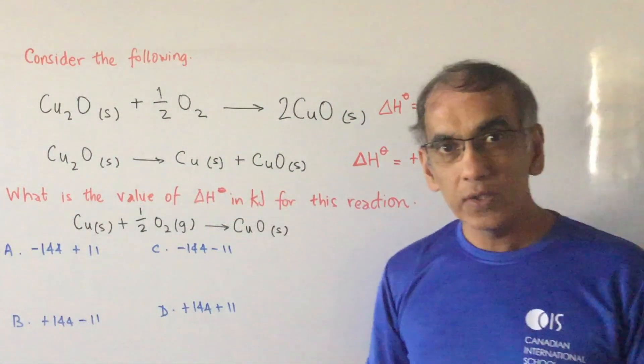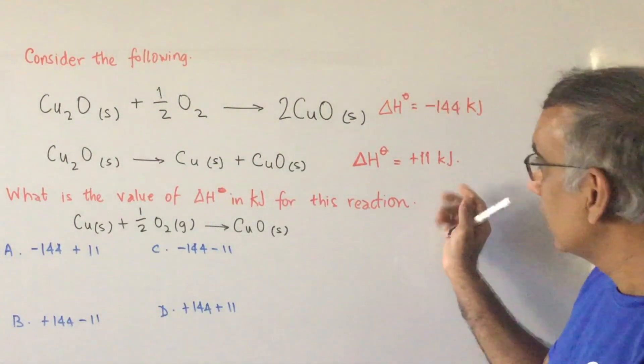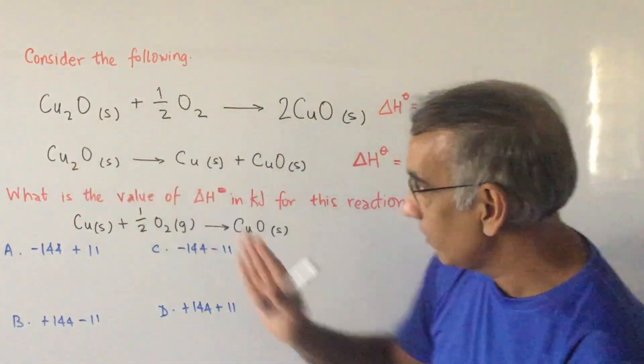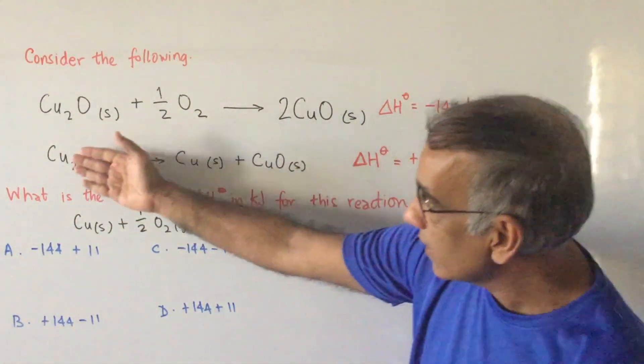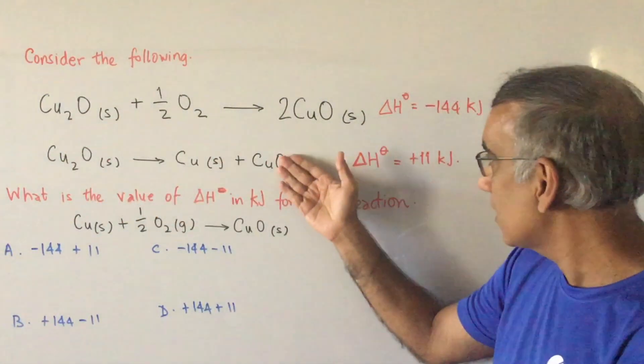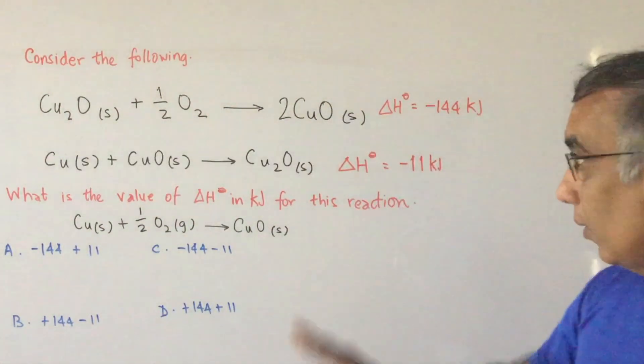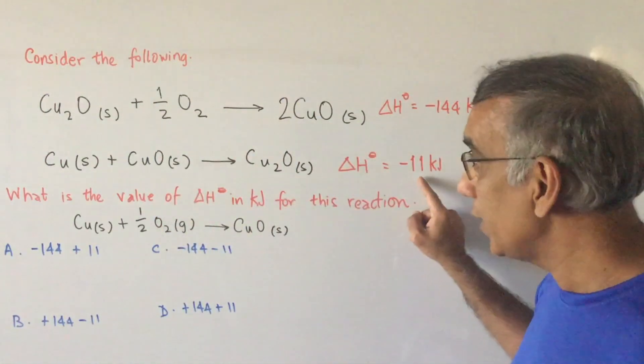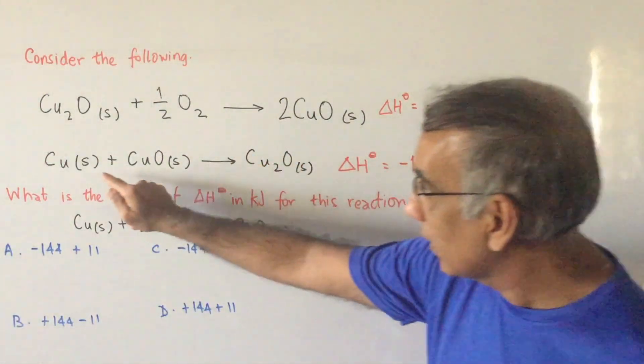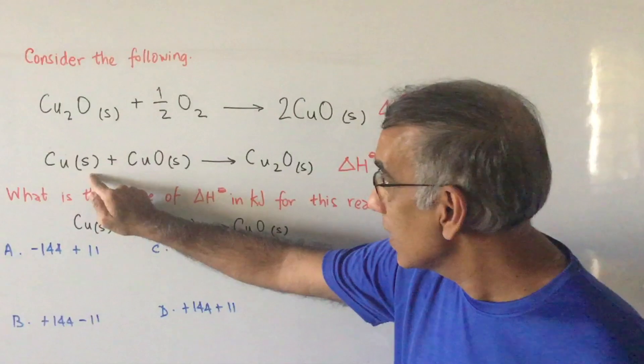So that immediately suggests that we need to reverse this equation, meaning to say put this on this side and this on this side. And don't forget that when you do that, you need to change the sign. Once we do that and we change the sign, then we have copper solid over on this side.